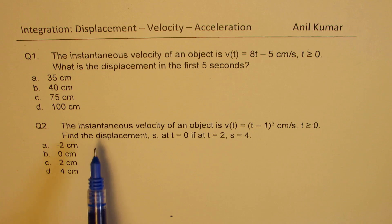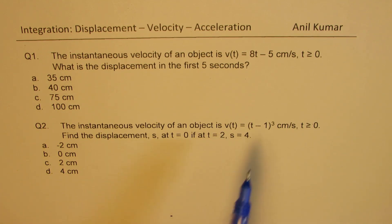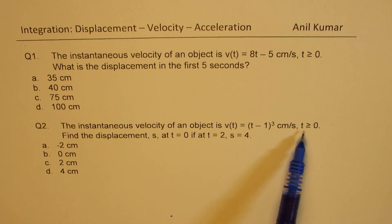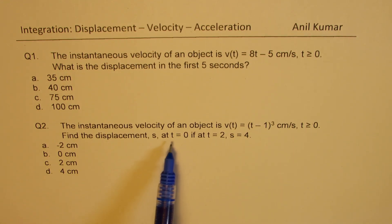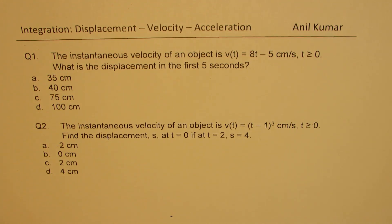Second question is: the instantaneous velocity of an object is (t minus 3) whole cube centimeters per second where t is greater than 0. Find the displacement s at t equals 0 if at t equals 2, s equals 4. Four options are again given to you. You can pause the video, answer these questions, and then look into my solution.